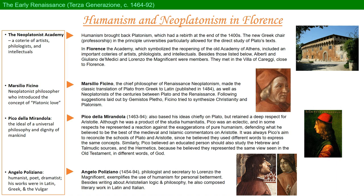Pico della Mirandola also based his ideas chiefly on Plato, but retained a deep respect for Aristotle, and was more of an eclectic, reaching into the study of Hebrew and the Talmudic sources. After all, the Old Testament is more integral to Christian belief than Greek philosophy. Pico believed in the ideal of a universal philosophy and the dignity of mankind. Angelo Poliziano was a humanist, philologist, poet, and dramatist who composed in Greek, Latin, and the Italian dialect. He was also secretary to Lorenzo the Magnificent, and he exemplifies the use of humanism for personal betterment.